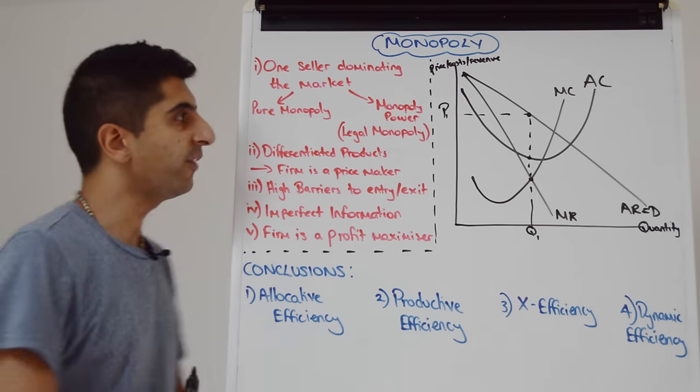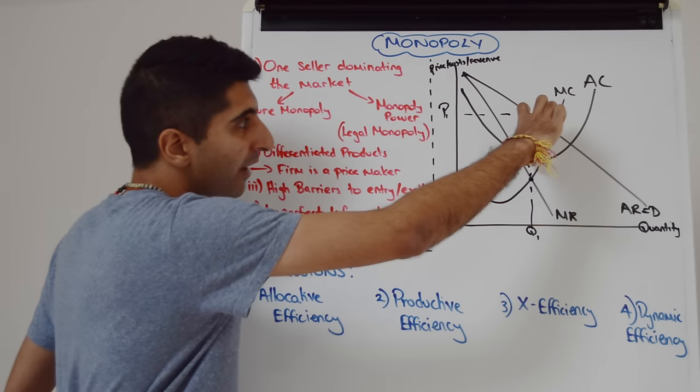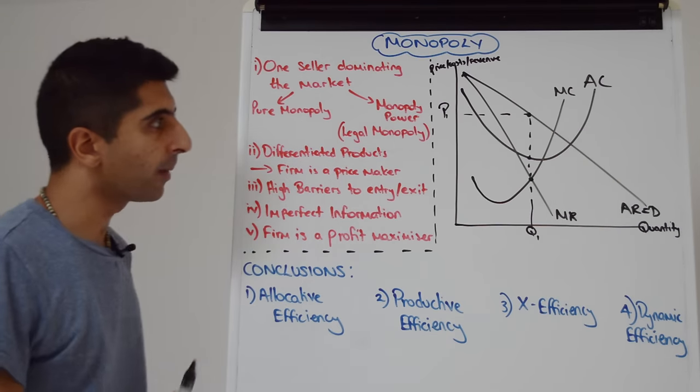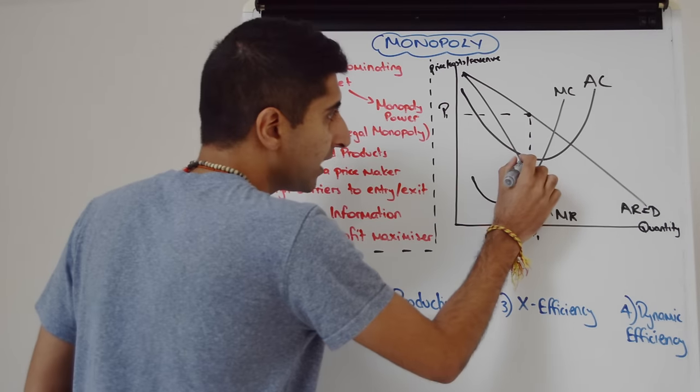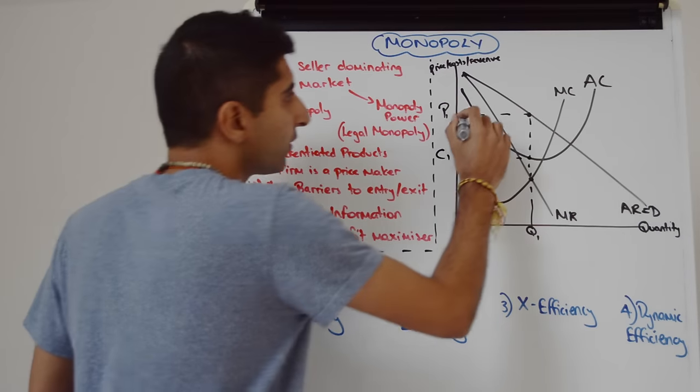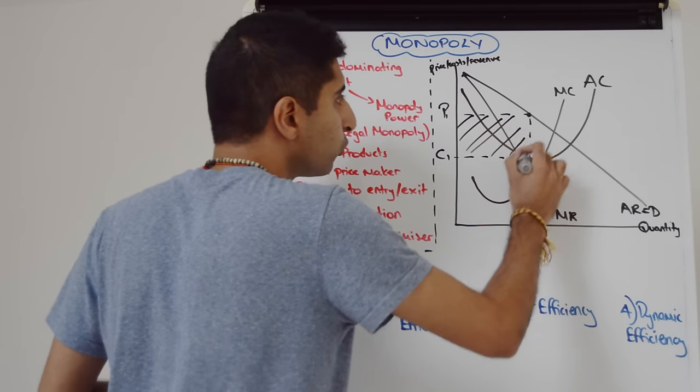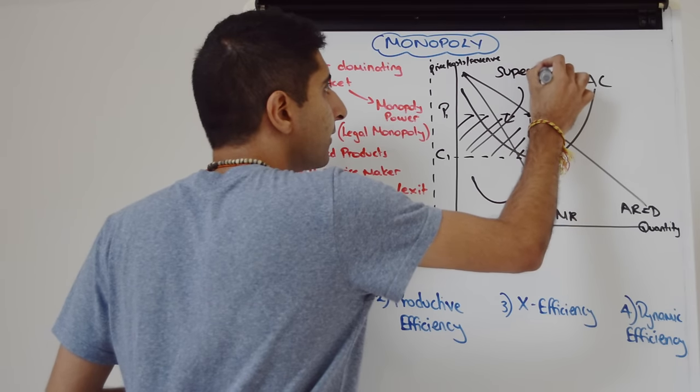We know it's supernormal profit because average revenue is greater than average cost. That vertical distance is the supernormal profit per unit multiplied by Q1, and we get the total profit. So we can take this point across. Let's call that point C1.